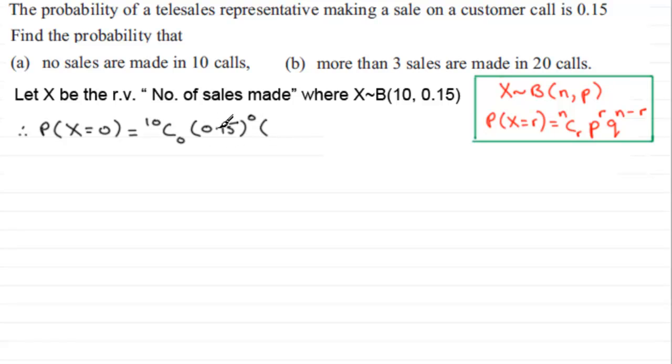So it's going to be 0.85, and that's to the power n minus r, so it's going to be to the power 10.